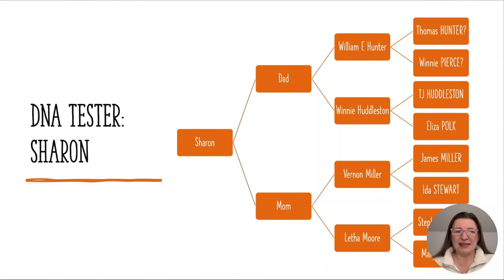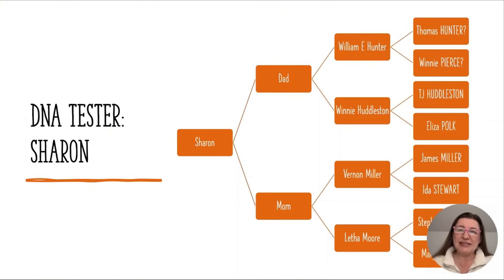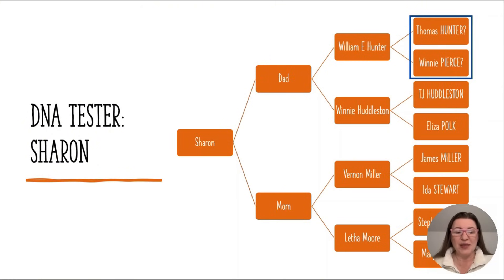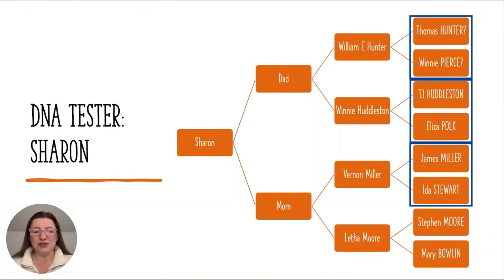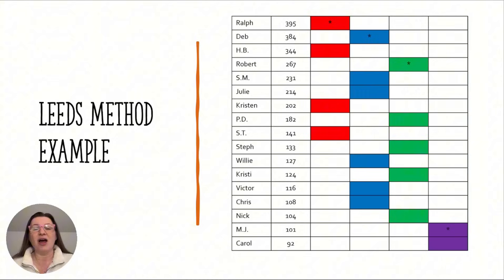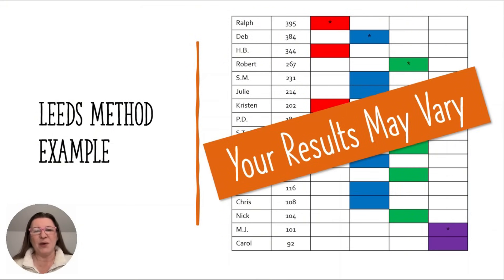We're going to start with the LEADS method. In general, the LEADS method often sorts our DNA matches into four clusters based on our four grandparent lines or our four sets of great-grandparents. So for Sharon's DNA matches, when I do the LEADS method, I should expect to see these types of clusters — not everyone will see those four clusters, and your results may vary.